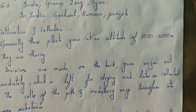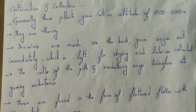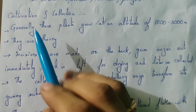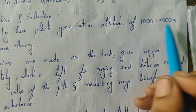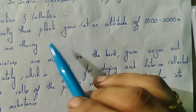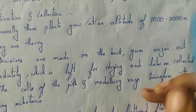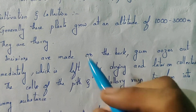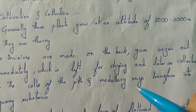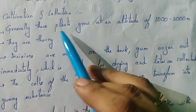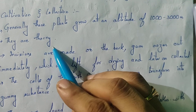Next is Cultivation and Collection. Generally, these plants are grown at an altitude of 1000 to 3000 meters. They are very thorny in nature — they have spines.